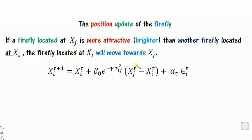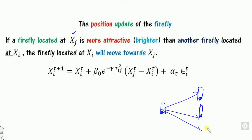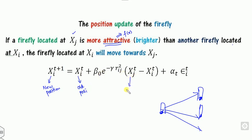The Firefly algorithm moves a firefly from one place to another based on a position update equation. A firefly located at position x_i can move toward position x_j depending on attractiveness, where attractiveness is determined by the fitness value f(x). So the firefly at x_i will be moved toward x_j. The new position is computed from the old position x_i, a constant term toward x_j, and a randomness component — this is the position update equation.